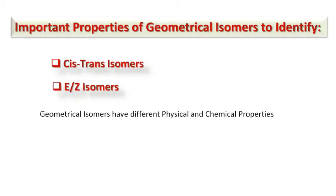Hello everyone, welcome to my channel Spectrum of Chemistry. This is my second lecture on geometrical isomerism. In the previous lecture, we discussed the necessary conditions for a compound to show geometrical isomerism and how to designate cis-trans and E/Z nomenclatures for a given compound. In this lecture, we are going to discuss some important physical and chemical properties of geometrical isomers that are useful to distinguish between cis-trans or E/Z isomers.